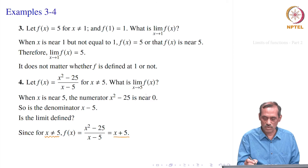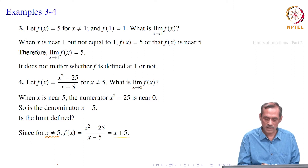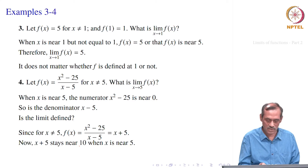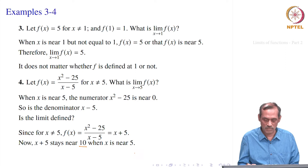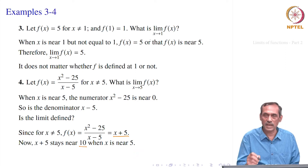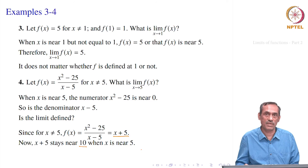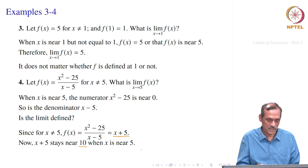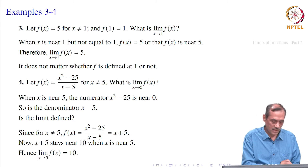As we see, when x goes to 5, (x plus 5) should go to 10. That is what our feeling is — 10 should be the limit. And formally, you can verify with the same approach as in our first example of (x plus 2), taking delta equal to epsilon. So the limit equals 10.